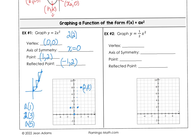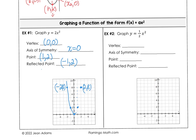We can check that: 2 times 2 squared equals 8. And the reflected point negative 2, positive 8 would also be on the parabola. So we filled our grid with points 1, 2 and negative 1, 2 and vertex 0, 0.